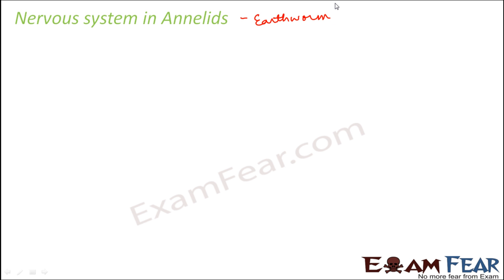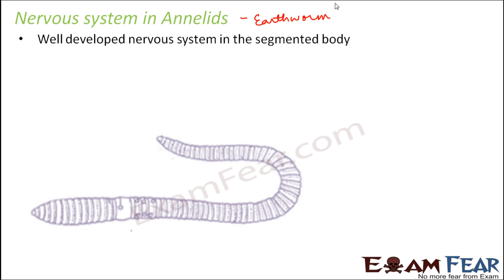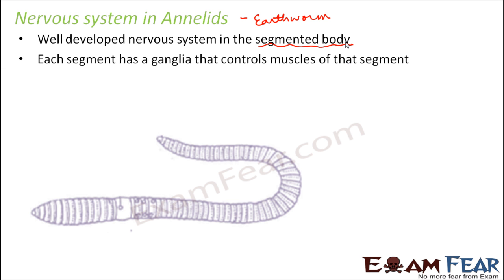The next group is the annelids, the best example being the earthworm. They have an even better developed nervous system. Since the body is segmented, each segment has a ganglia that controls the muscles of that particular segment. So for each individual segment, one specific ganglia controls everything in that segment, making the overall nervous system more complex and better developed.